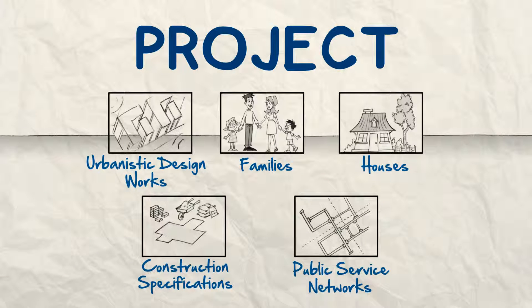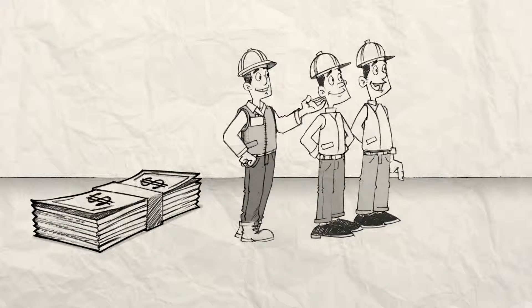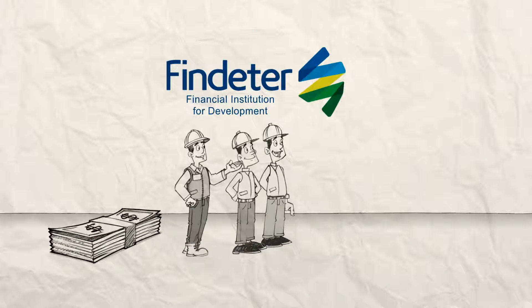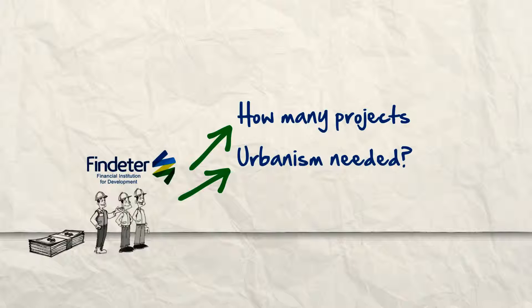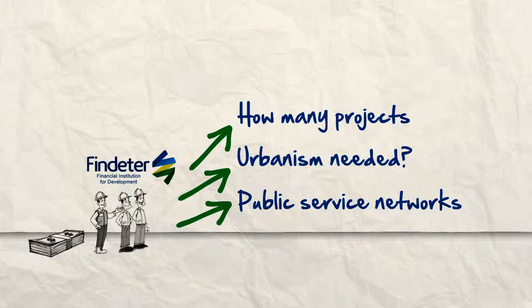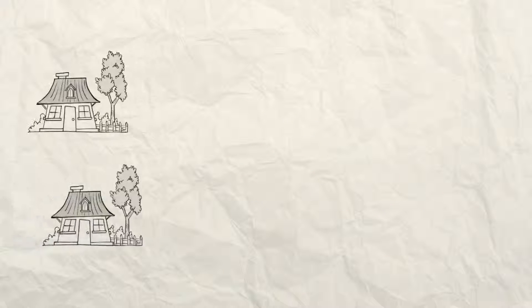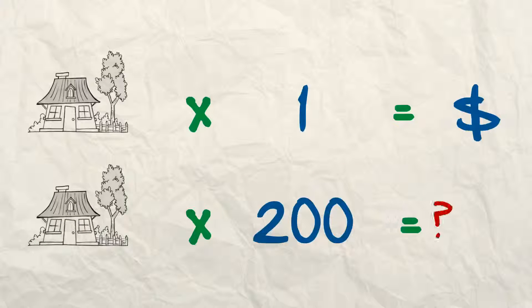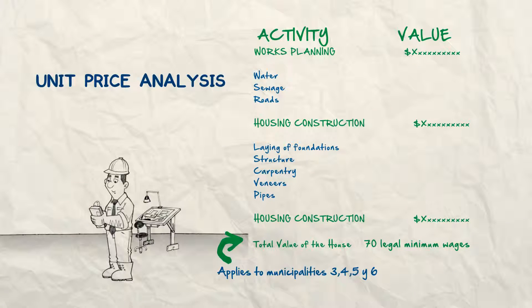Now let's get into a thorny issue — the elusive money, the budget. This is why you and your team, with the help of Findeter, must define the quantity survey, the urbanism works, the public services networks, and the home installations. You need to calculate the cost of each item of the project. This is what the experts call the unit price analysis.